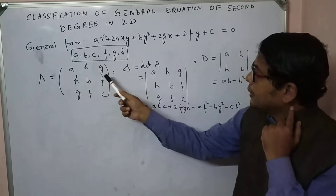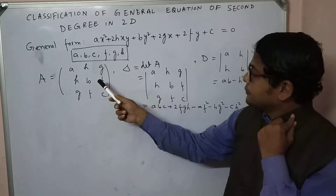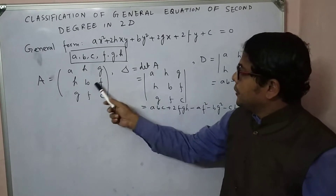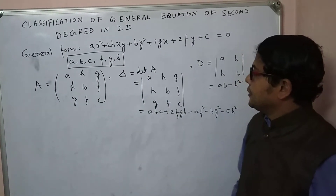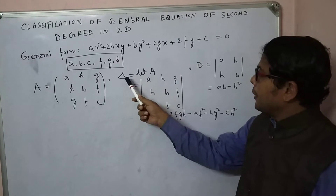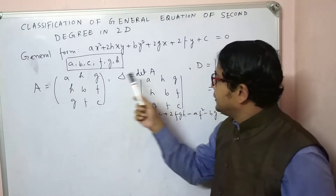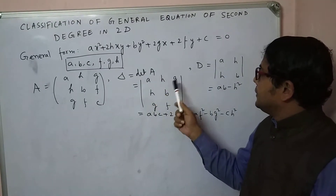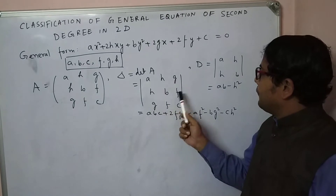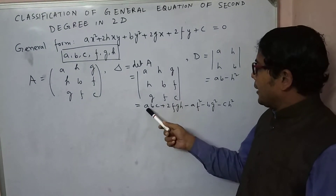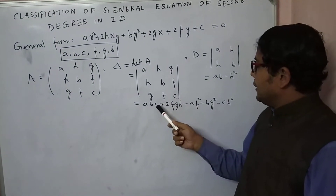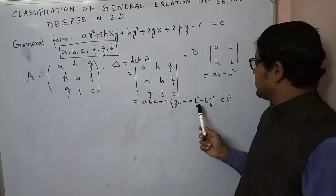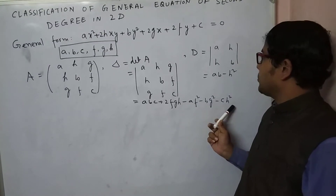This symmetric matrix [A, H, G; H, B, F; G, F, C] has determinant delta = |A, H, G; H, B, F; G, F, C|, and its value is ABC + 2HGF − AF² − BG² − CH².